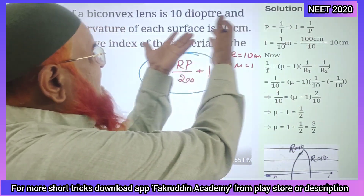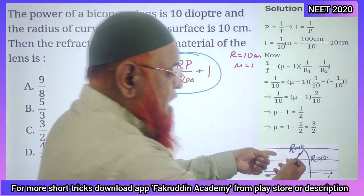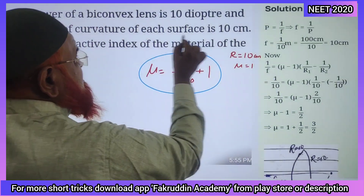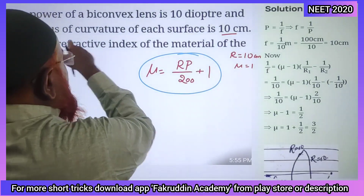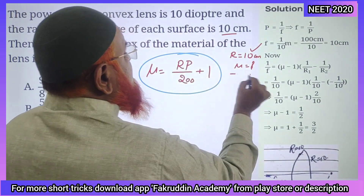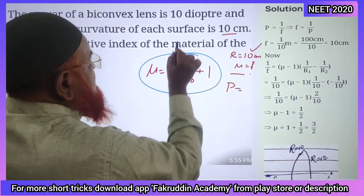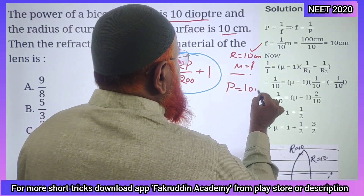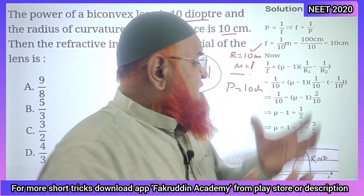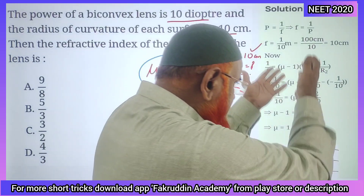Students, whenever a problem asks for the refractive index of a convex lens, they have given the radius of curvature and asking us to find the refractive index. Power is also given as 10 diopters. Generally, books will explain this by using the lens maker's formula, which makes the process very lengthy.